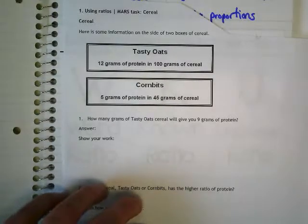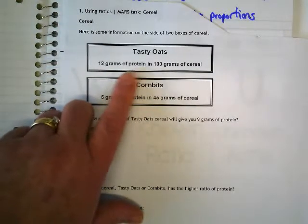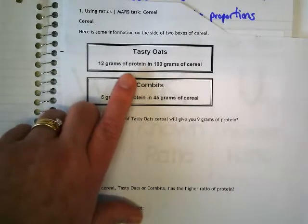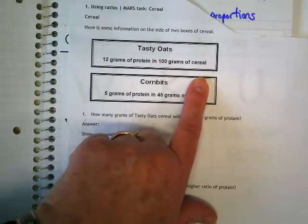We looked at this very first and there's two things being compared. That's always the case when we have ratios. We always have two things being compared. What were the two things being compared here? Grams of protein and grams of cereal.